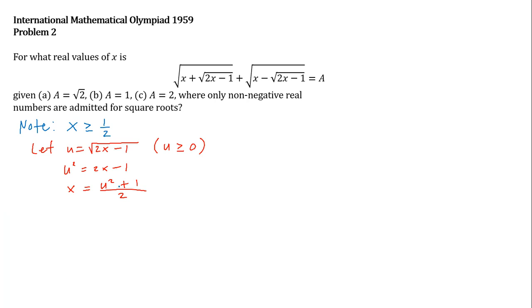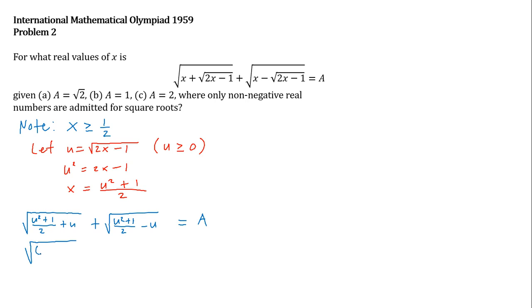Now let us replace x by (u² + 1)/2. The original equation then becomes the square root of (u² + 1)/2 plus u, plus the square root of (u² + 1)/2 minus u, and the sum equals a. Combining the fractions inside, the first term becomes (u + 1)² divided by 2, and similarly the second term becomes (u − 1)² divided by 2, equal to a.